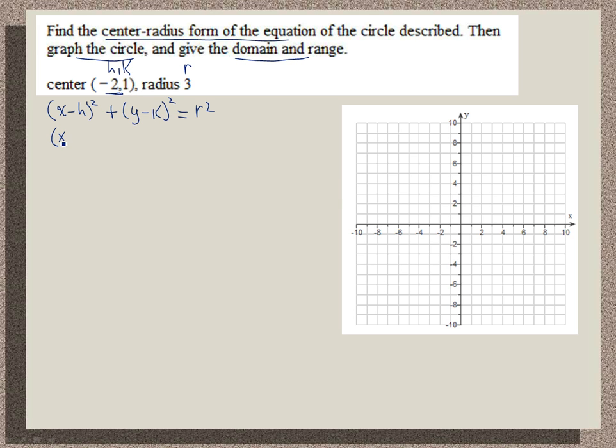So here I'm going to get x minus a negative 2 squared plus y minus 1 squared is equal to 3 squared.